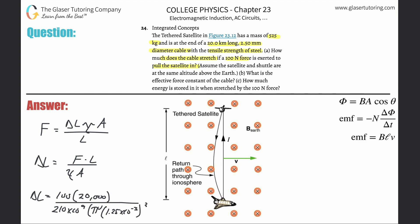Now all we got to do is plug and chug. So it's 100 multiplied by 20,000, then divided by parenthesis, 210 times 10 to the ninth times pi times 1.25 times 10 to the minus 3 squared, close those parentheses.